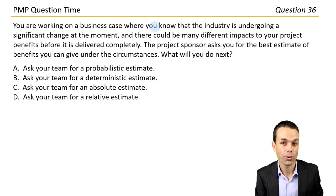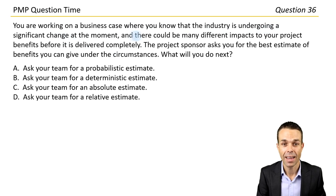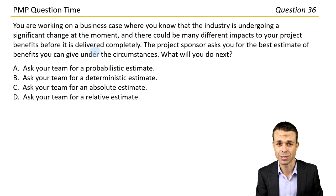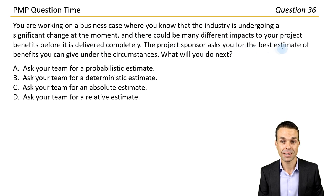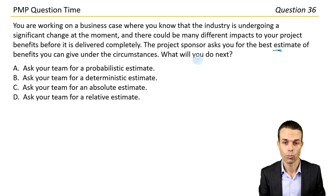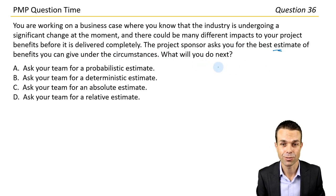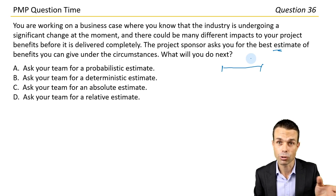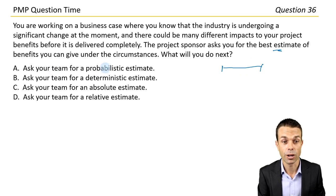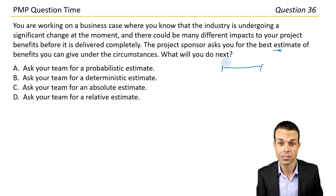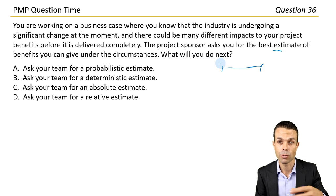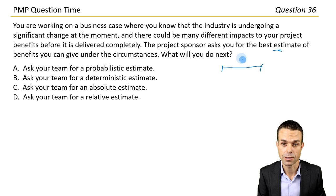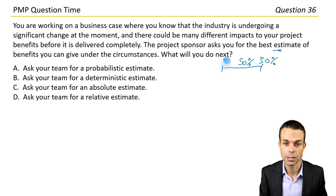You are working on a business case where you know that the industry is undergoing a significant change. There could be many different impacts to your project benefits before it's delivered completely. Your project sponsor asks for the best estimate of benefits you can give under the circumstances. What will you do next? Option A: Ask your team for a probabilistic estimate — that is a range with probabilities attached to it. Maybe there's a 50% chance of this outcome, a 30% chance of this one, a 90% chance of this one. That's pretty handy.